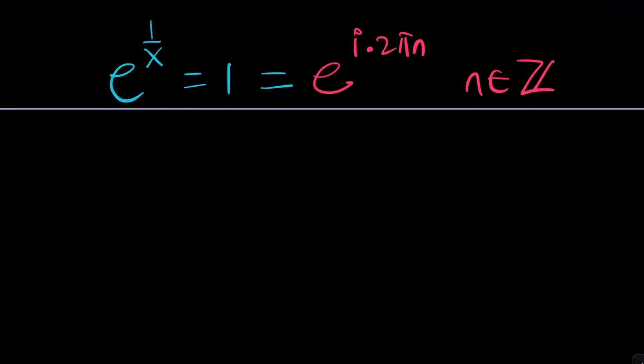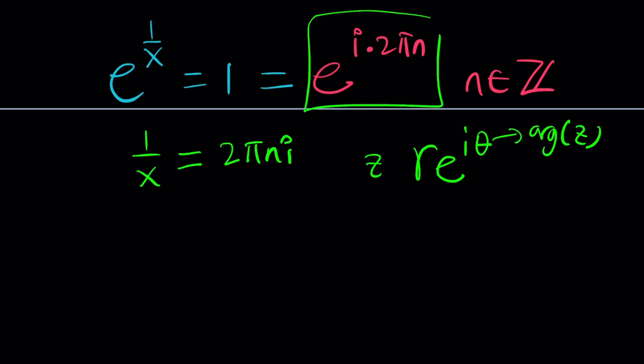Now, from here we get the following equation. Obviously, you're going to natural log both sides. But it's going to give you 1/x equals 2πni. I wanted to write it this way first, because usually a complex number is expressed as r times e^(iθ), where theta is the argument of the number, and r is the modulus.